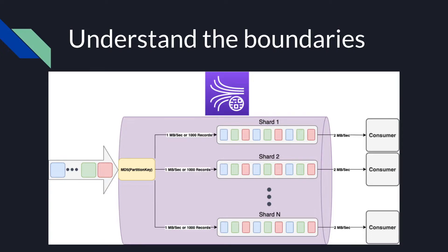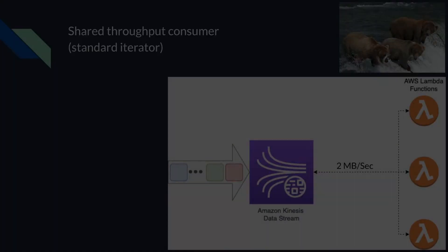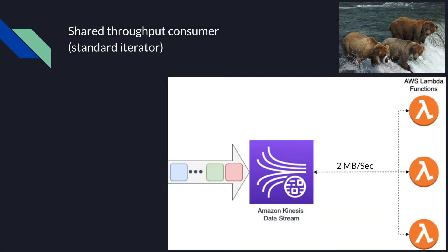So in theory, you can consume the stream twice as fast as you can write to it. The first type of consumer is the shared consumer, also called standard iterator.